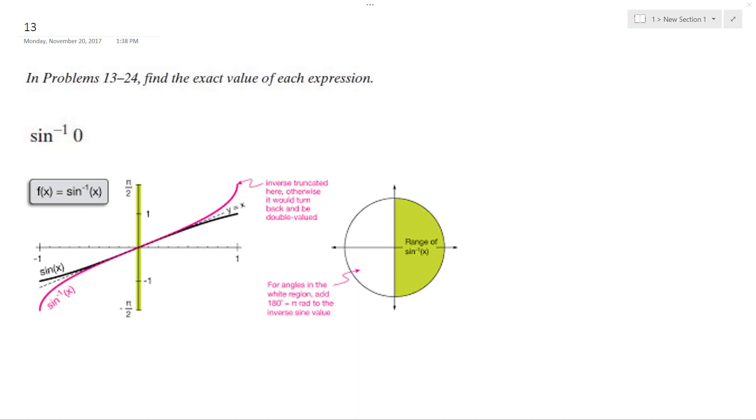Alright, so we want to find the exact value of the inverse of sine of zero. It is equal to zero. I'll explain why.